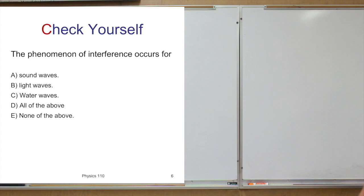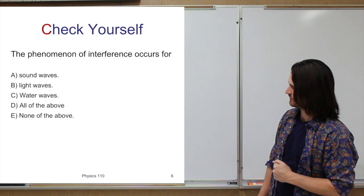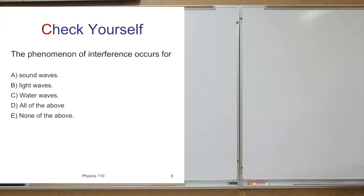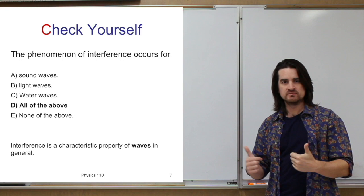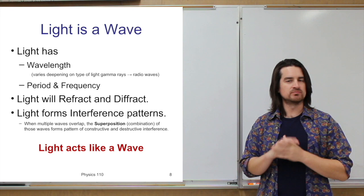Quick question: the phenomenon of interference — this property — it occurs for which of these things? Hopefully you said D: all of these, because interference will occur with all of these kinds of things because they're all waves. It might seem odd why I'm pushing this point so much, but you should understand why just a little bit later in this lecture.